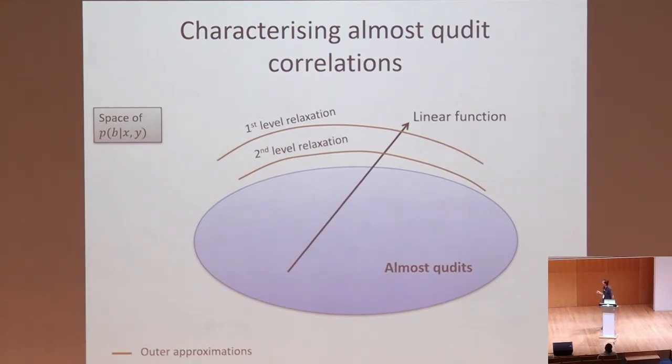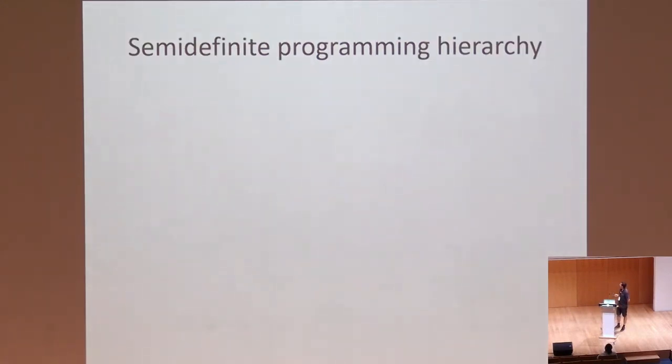We do this by using the method of semi-definite relaxations, which I'm sure many of you are familiar with. The gist of the idea is that you try to give a relaxation of the actual set of correlations that you want to characterize by using a hierarchy of SDPs. By running a first level, you can get an outer relaxation. By running a more complicated second level, you can get a better outer relaxation, and so on.